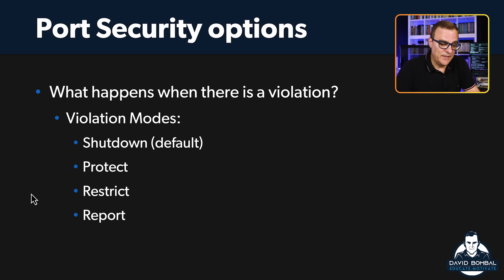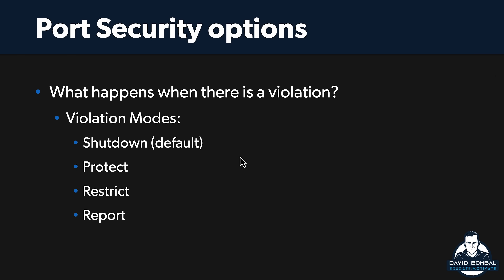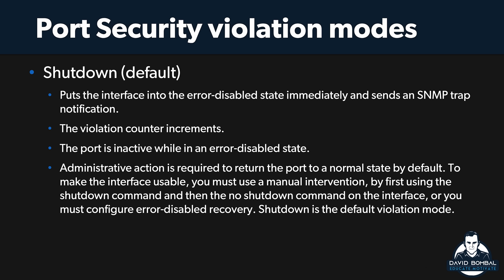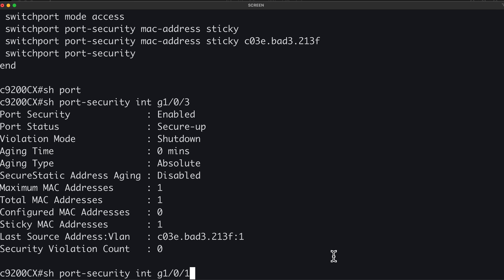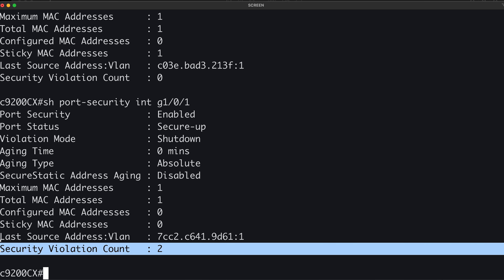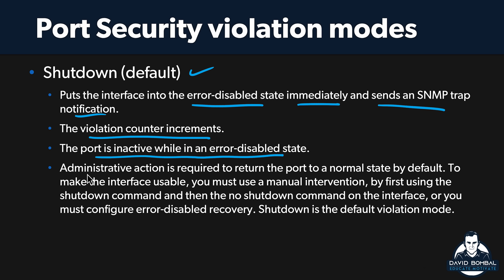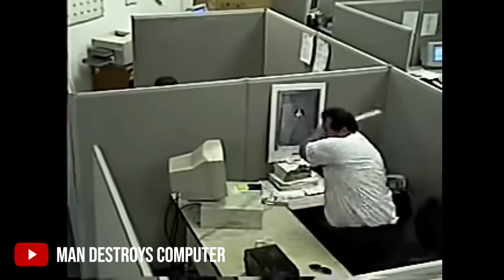What happens when there's a violation? I've already demonstrated shutdown, but we also have protect and restrict — we won't worry about report for the CCNA course. With shutdown, as I've demonstrated, it's the default — the port is put in the error-disabled state immediately, and an SNMP trap notification is sent. The violation counter increments — on gigabit 1/0/1 notice the violation count here is two. The port is inactive while in the error-disabled state. As an administrator, you need to shut and no-shut the port to bring it back again. That's a lot of hassle, but it's more secure, because your users are probably going to come to you and complain that the network is down — and you can ask them what they did. Did you plug in a WiFi access point into that port? What did you do to cause a violation?